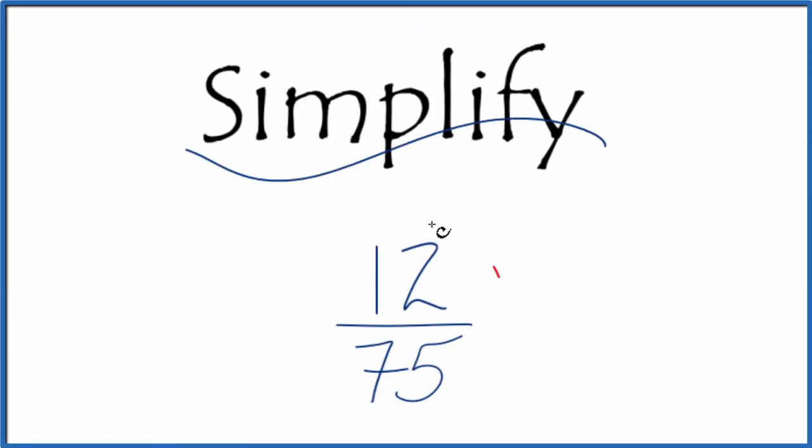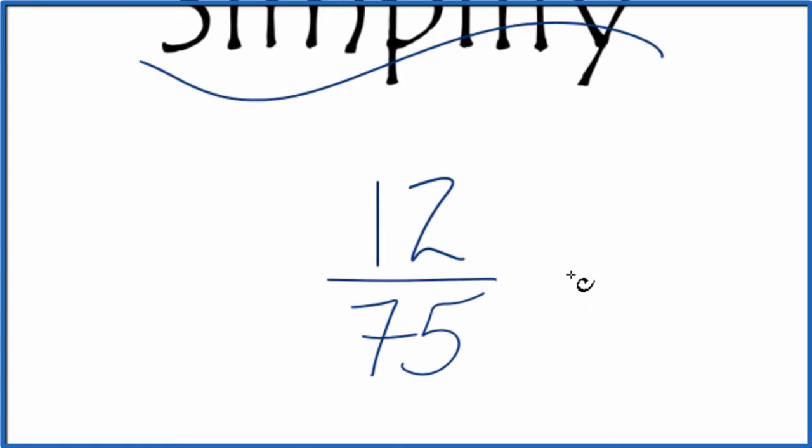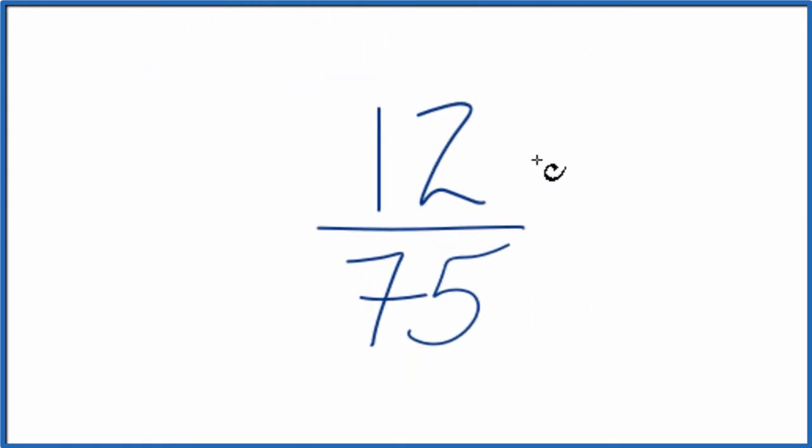If you're asked to simplify the fraction 12 75ths, here's how you do it. We're looking for another fraction that's equivalent to 12 over 75. So we want to have something that has the same value as 12 divided by 75, just that it's in lowest terms.